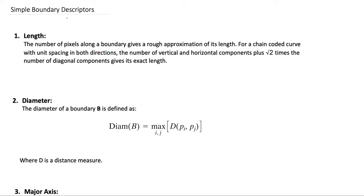To find the length of a boundary, the number of pixels along the boundary gives a rough estimation of its length. For a chain-coded curve with unit spacing in both directions, the number of vertical and horizontal components plus root 2 times the number of diagonal components gives the exact length. For example, using the eight-directional chain code, horizontal and vertical components have length 1, diagonal components have length root 2, and summing all these values gives the total length of the boundary.